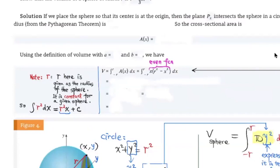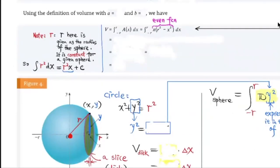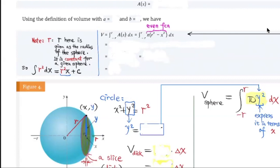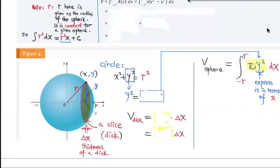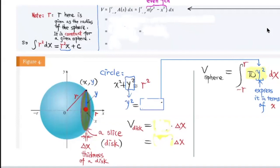If we place the sphere so that the center is at the origin, and then slice this sphere perpendicular to the x-axis, each slice over here is like a disk. Think about this solid as being made up by adding all those slices. For this disk, what will be its radius — from here to here? This point is a point on the circle, so let's label it x comma y. The radius of the disk corresponds to the y-coordinate.